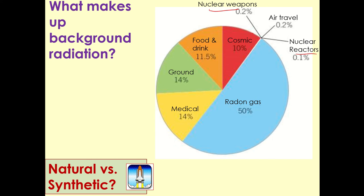The other thing to think about is which ones are natural versus which ones are synthetic. Radon gas, under the earth is natural. The ones under the ground are natural. In food and drink it's natural. Cosmic rays are natural. The ones that are synthetic are medical, nuclear weapons, air travel, nuclear reactors, but that's making up less than 15 percent. So natural is making up about 85 percent of the background radiation that's around us.